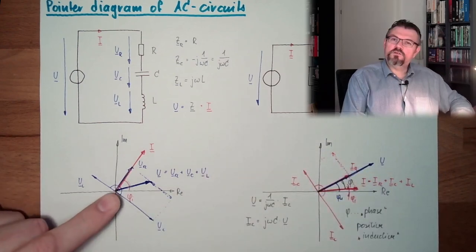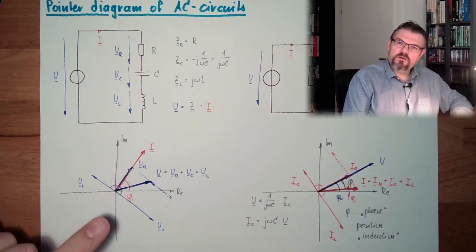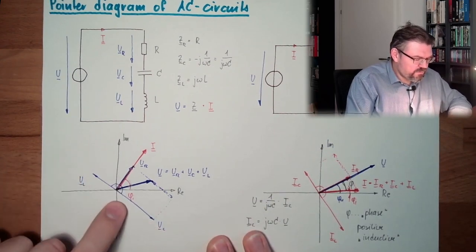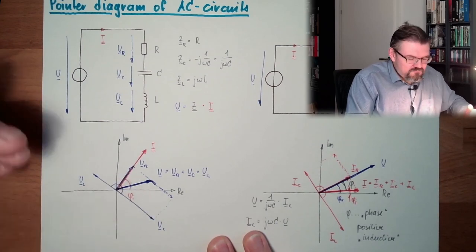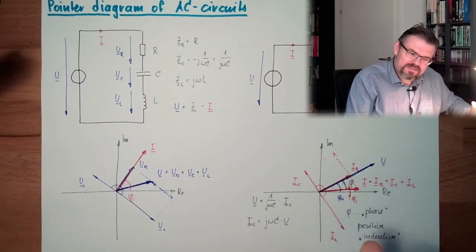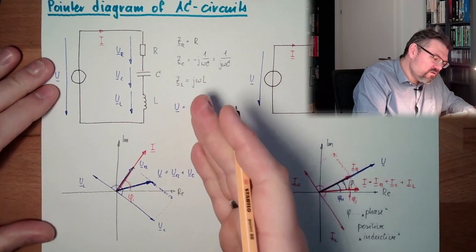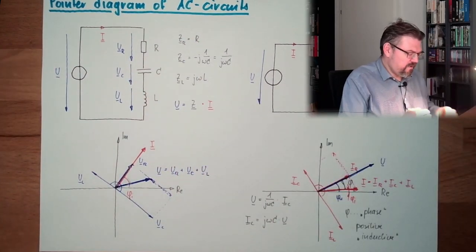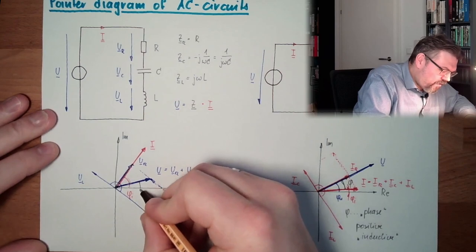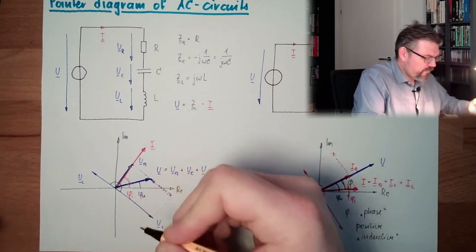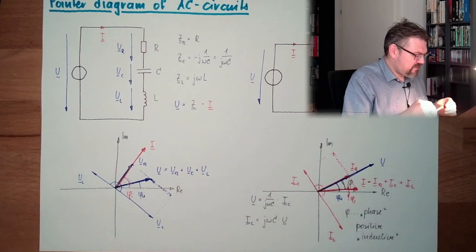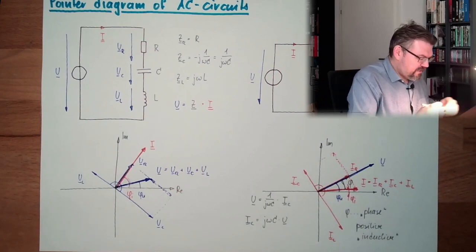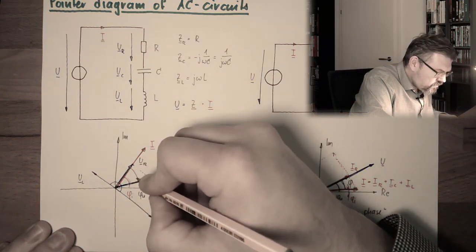If you are watching the German version, there it's different. There I've chosen this a little bit longer, this a little bit shorter, and it just depends on the values of the components. So here we have again our phi U. And now, what is happening with our phase? The phase is again here, phi.